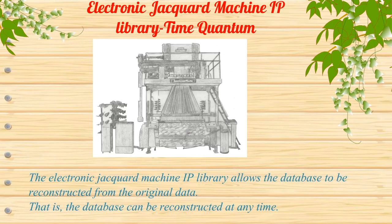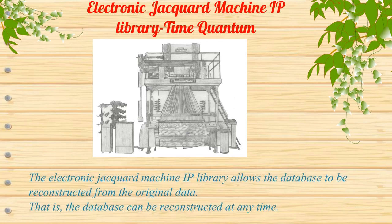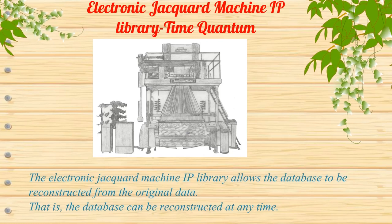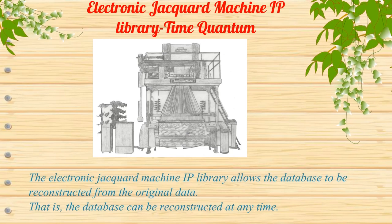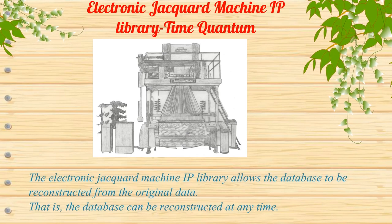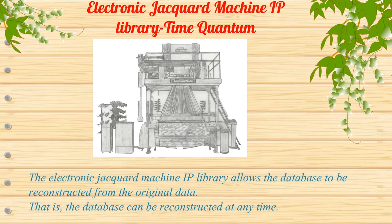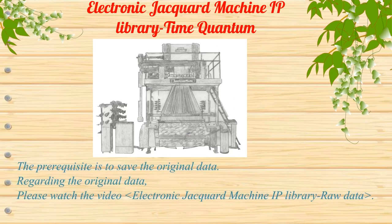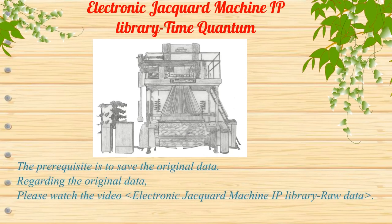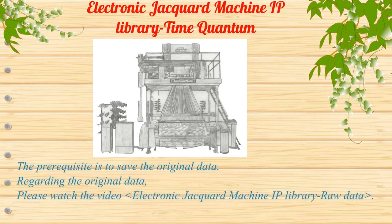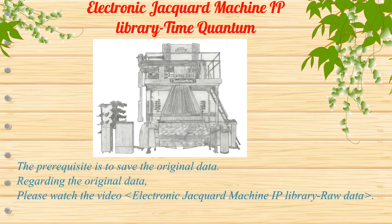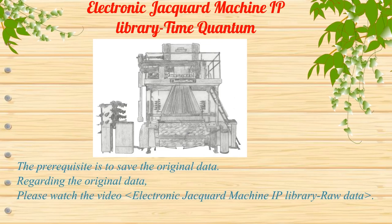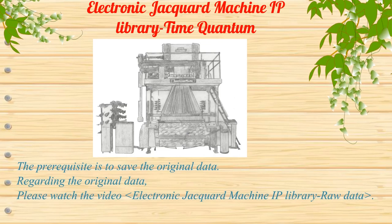The electronic jacquard machine IP library allows the database to be reconstructed from the original data — that is, the database can be reconstructed at any time. The prerequisite is to save the original data. For more details on original data, please watch the video 'Electronic Jacquard Machine IP Library: Raw Data.'